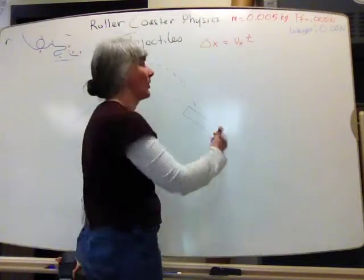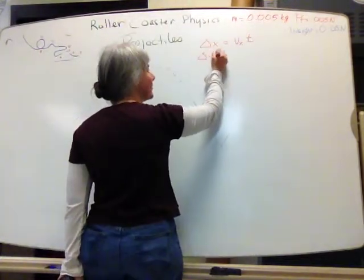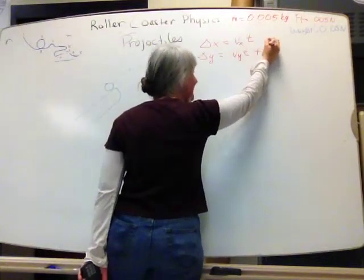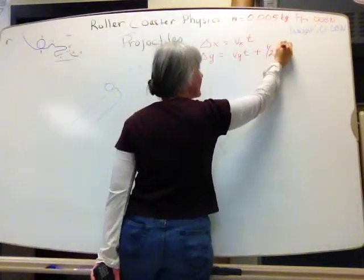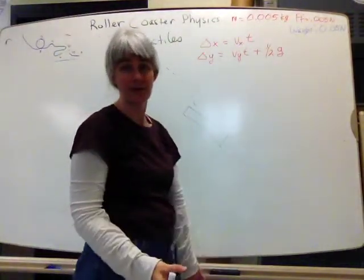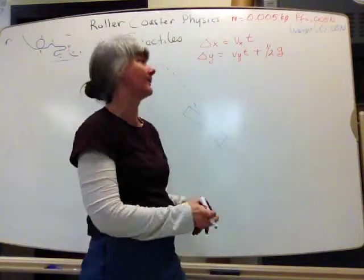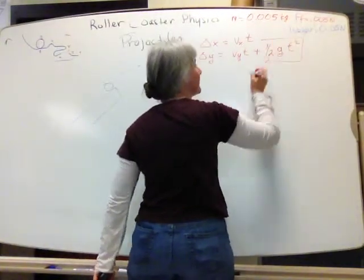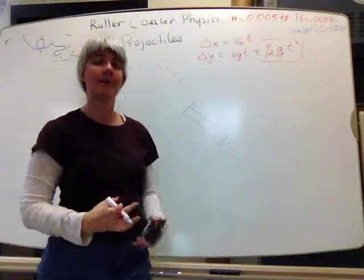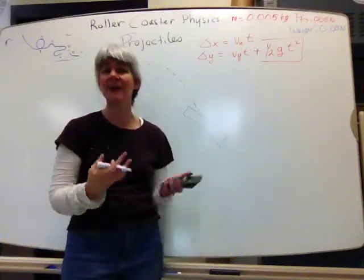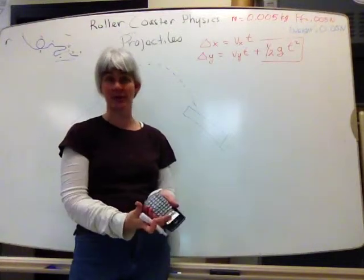But vertically, the thing has some acceleration. The vertical displacement is equal to the vertical velocity times time plus one-half the vertical acceleration, which because this is on Earth, is 9.8 meters per second squared, or you can use 10, times the time squared. This piece, this additional distance because I'm accelerating, we haven't done in class, but is a standard physics equation.